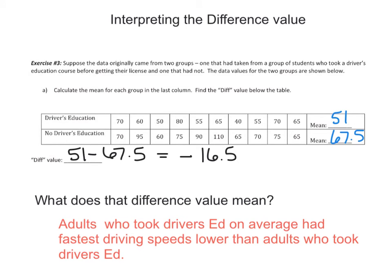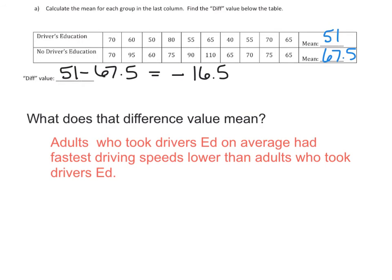Okay, now this sentence should be worded perfectly. Adults who took driver's ed on average, so there's a keyword, so I'm describing these driver's ed adults, on average, had fastest driving speeds lower than adults who did not take driver's ed. And how do I know it's lower? Well, the difference value was negative. So adults that took driver's ed, on average, had lower fastest driving speeds than adults that did not take driver's ed. So their average was lower than their average.